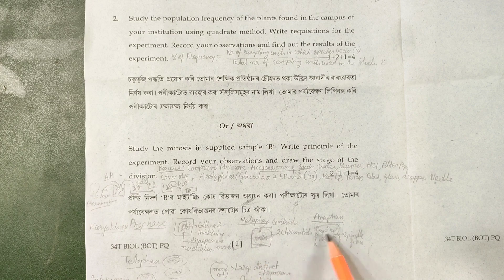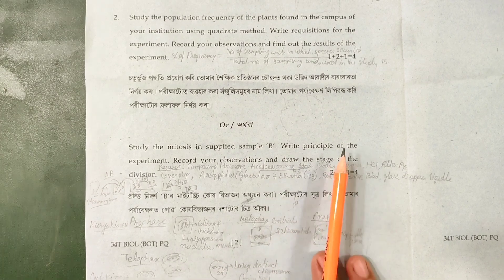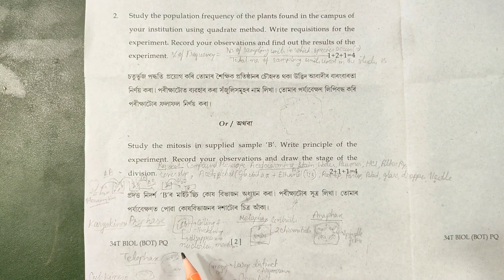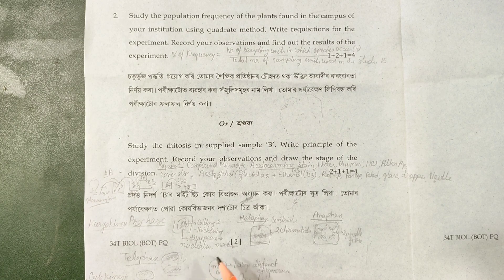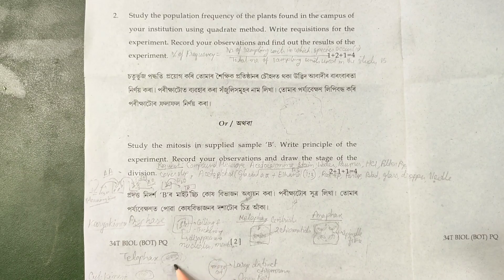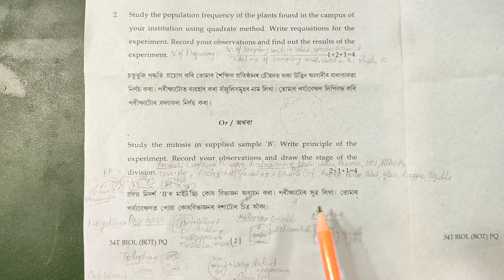Last is telophase, where we can reform the nuclear membrane. So this is the nuclear membrane and nuclear mass reforming. We can also have the cell organelles and the cell organ. Finally we have cytokinesis, which is the cytoplasmic division following nuclear division.